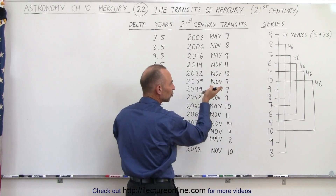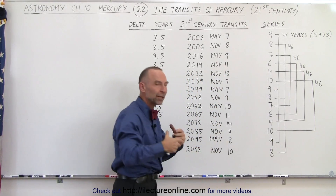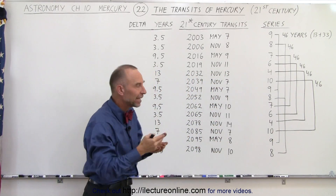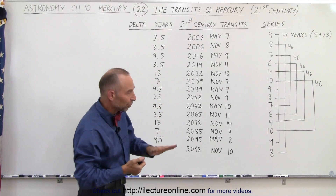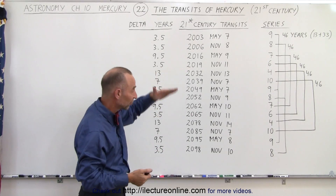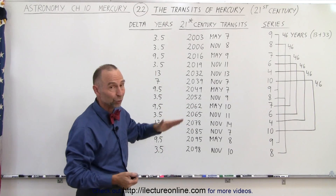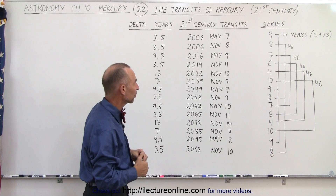So slowly it will shift through the calendar — it'll be a fraction of a day every 46 years. You can see that the series will last for quite a long time, for quite a few centuries.